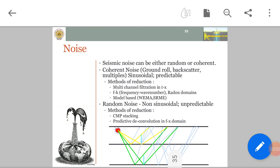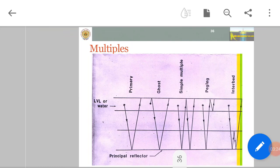Coherent noise is sinusoidal, predictable. Methods of reduction include multi-channel filtration in TX domain, FK which is frequency domain, Radon domain transformation, model-based noise elimination. Random noise is non-sinusoidal, unpredictable. Method of reduction is CMP stacking. We also do predictive deconvolution in the FX domain.